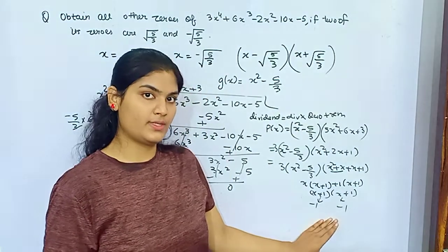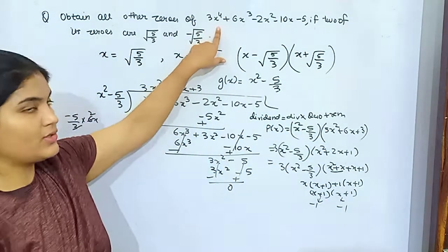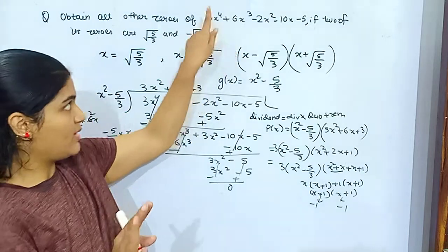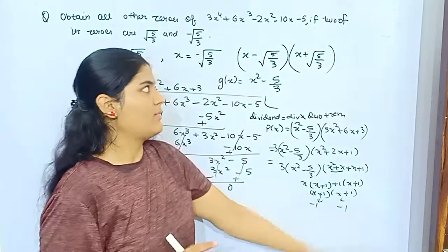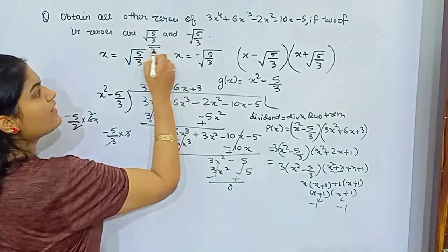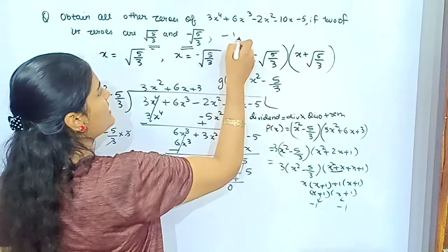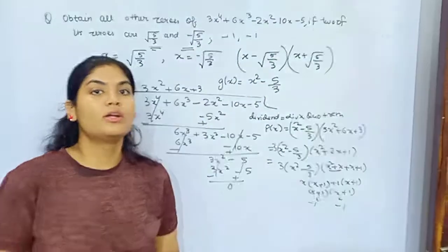Now another two roots for this bi-quartic equation: total 4 roots, right, because degree is 4. So -1, -1, √5/3, -√5/3. This is our complete set of solutions.